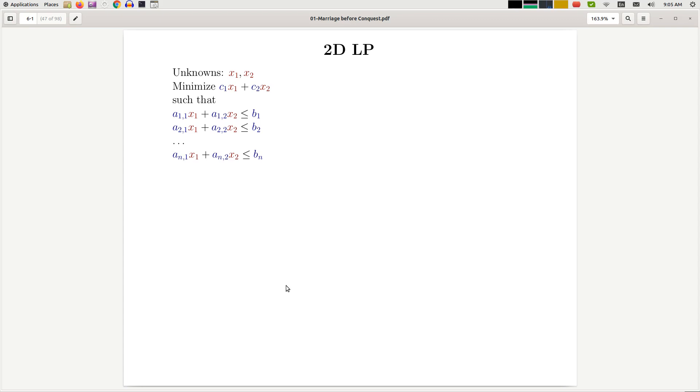The two-dimensional case of a linear program is already more complicated. In this problem, we have two unknowns: x1 and x2. Again, the input includes all the c values, all the b values, and all the a values.